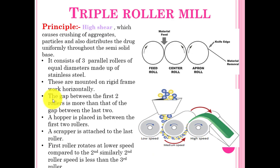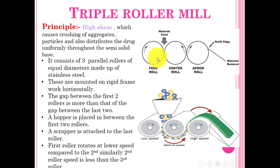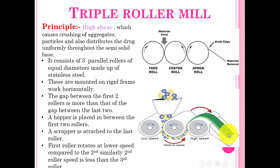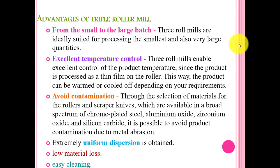The triple roller mill was explained in a previous lecture. It consists of three rollers: the feeding is here and there is a difference in speed between them — low speed, medium speed, and high speed. Material enters here, is broken down and mixed, and is collected by a scraper. The scraper acts like a knife, as mentioned before. An advantage of the triple roller mill is that it can handle from small to large batch sizes.